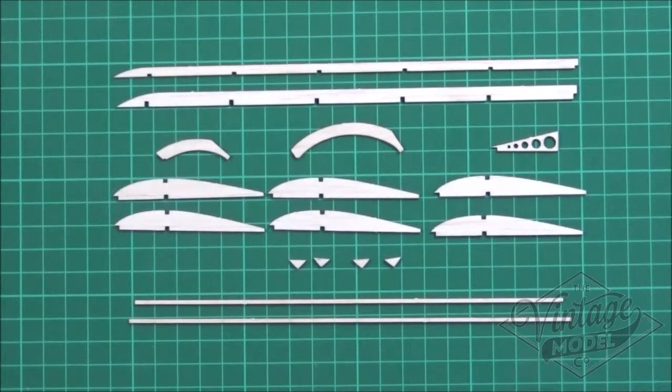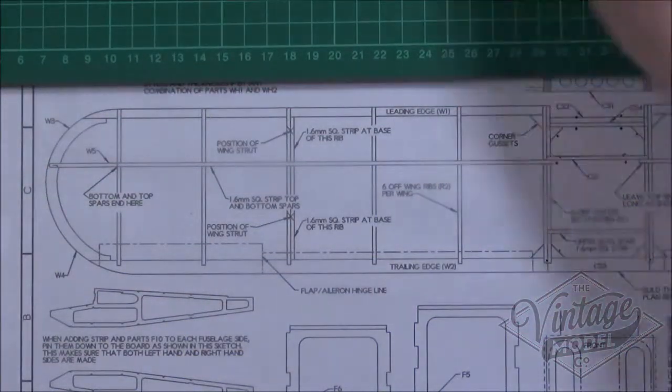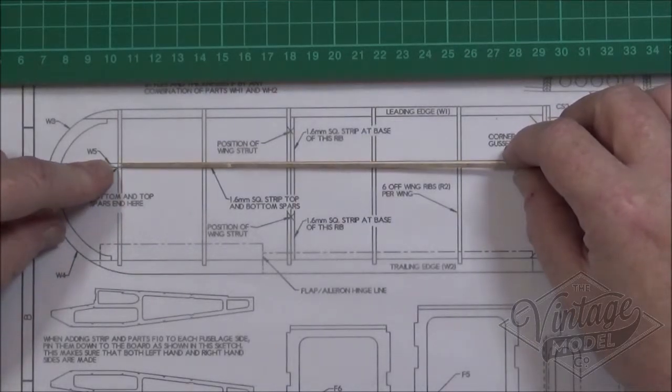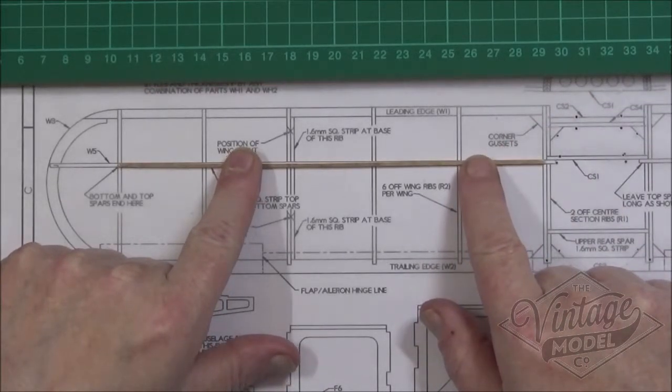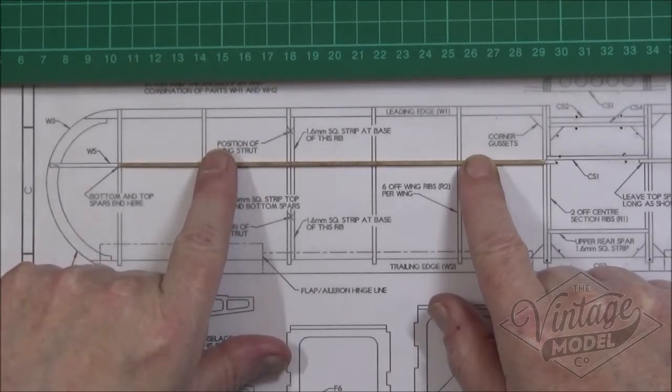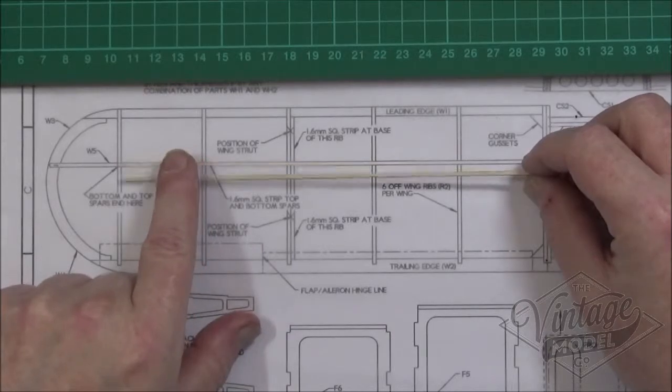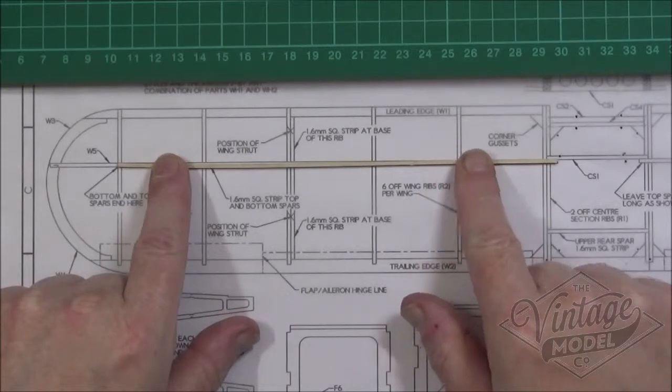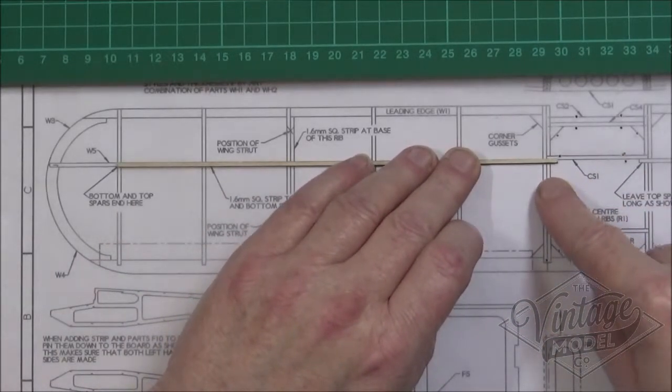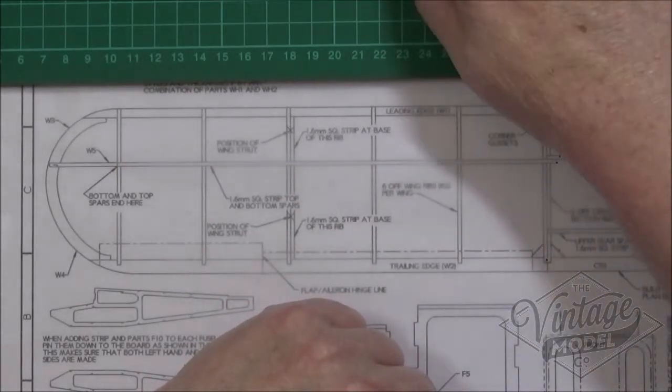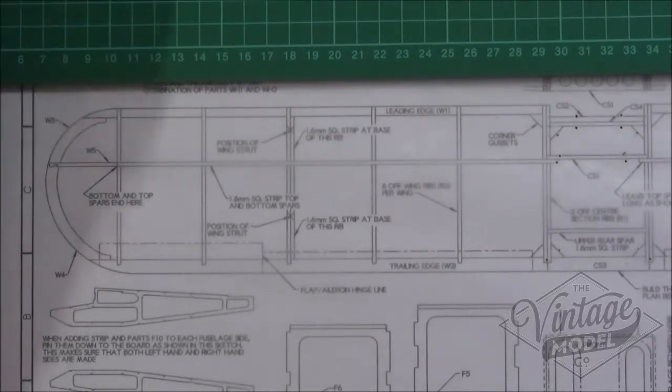The shorter one is the lower spar and the longer one is the top spar. I've already measured these and cut them because the bottom spar needs to end on this outer rib here and on the inner one, but the top spar also ends on the inner one but then overhangs the last spar so that there's more gluing surface when you join it up to the center section. With that we will get started.